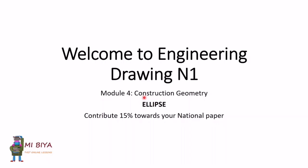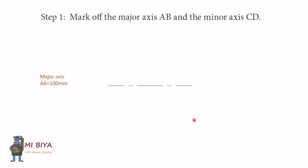Dear student, it's Mr. Biya here. Today we are going to have Module 4, which is Construction Lines. We are going to do a unit called Ellipse. This unit contributes 15% towards your national paper.